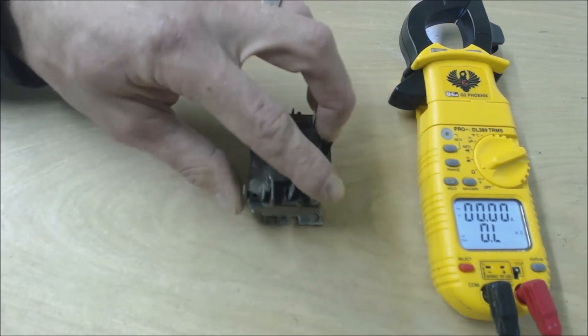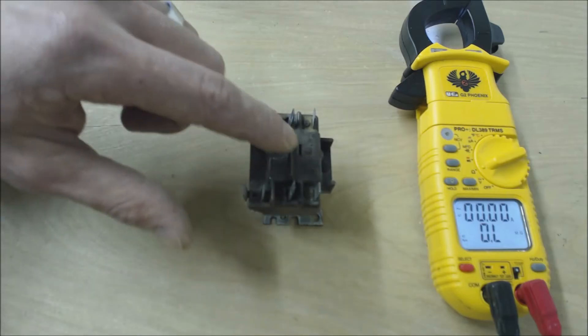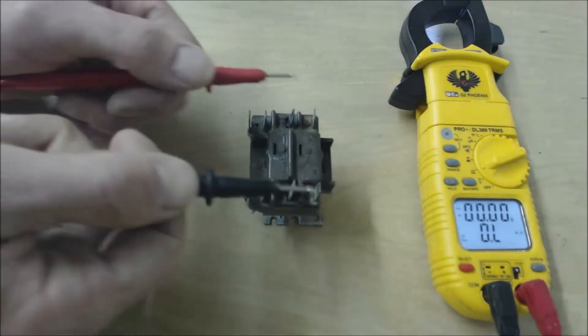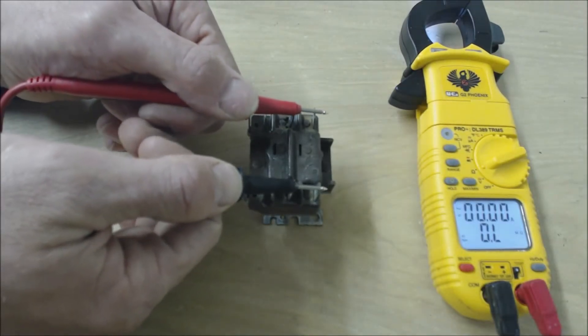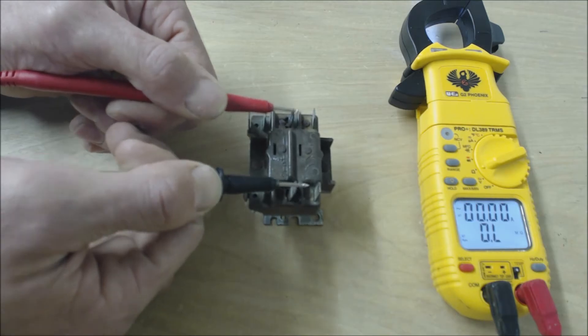We're also going to check here and here as well. It says that 1 and 3 are normally open. The wiring diagram is right on the top of this. We're going to test that out. We should not have any continuity, which we do not, and we'll check here. We should not have any continuity, good.